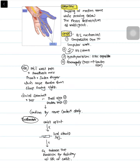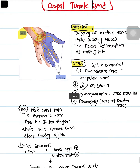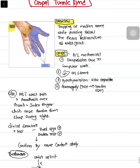In this short, we are going to talk about carpal tunnel syndrome. As you can see in this image, there is a trapping of the median nerve while passing below the flexor retinaculum at the wrist.